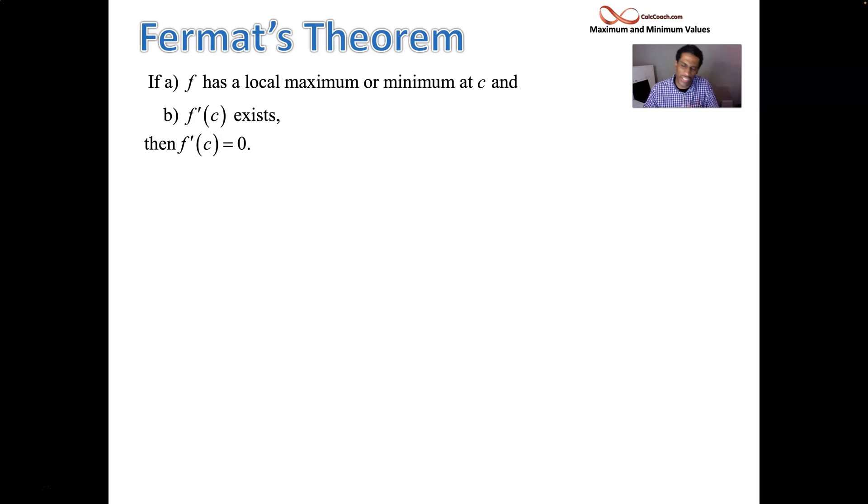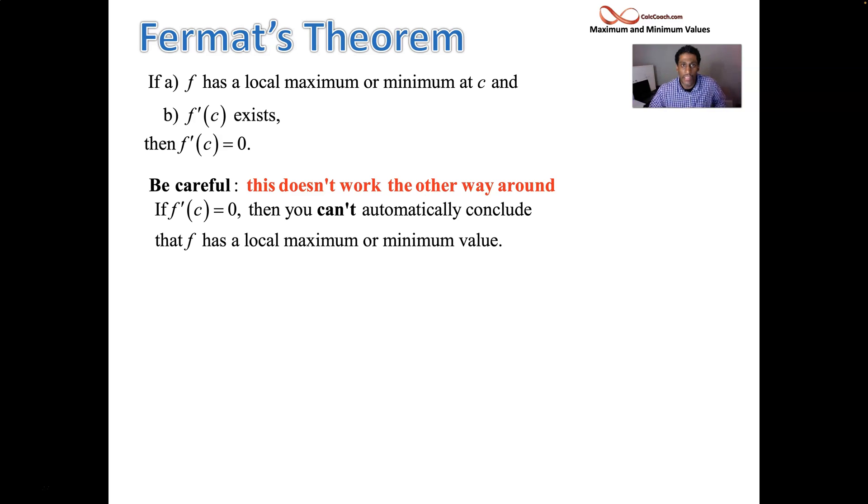The issue with this theorem, like with a lot of theorems, we try to think, well, okay, it's an if-then statement. That's a conditional. If your hypothesis is true, then you have your conclusion. Most people try to run things backwards and say, what about going the other way? If your conclusion is true, can you lead to the hypothesis? In here, that's not the case. Just because your derivative is zero doesn't guarantee that you're going to have an absolute maximum or an absolute minimum value. It opens the door for it, but it's not a guarantee. If your derivative is equal to zero, you can't automatically conclude that your function has a local max or a local minimum value.